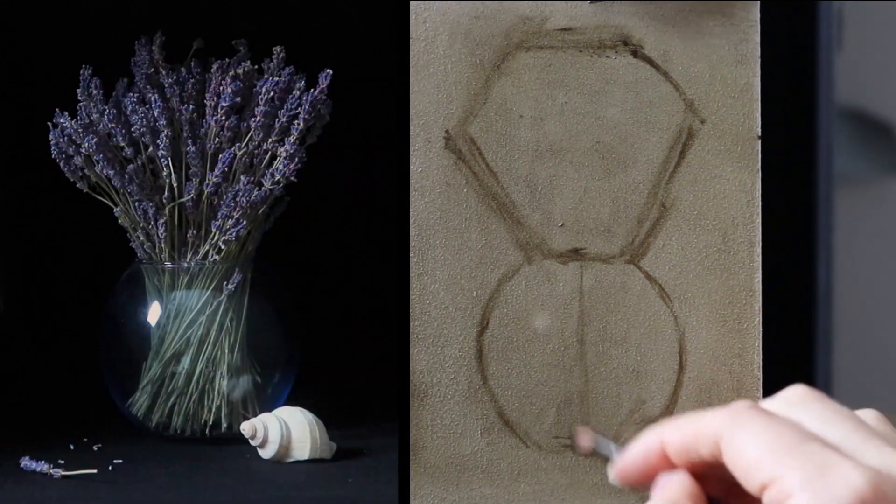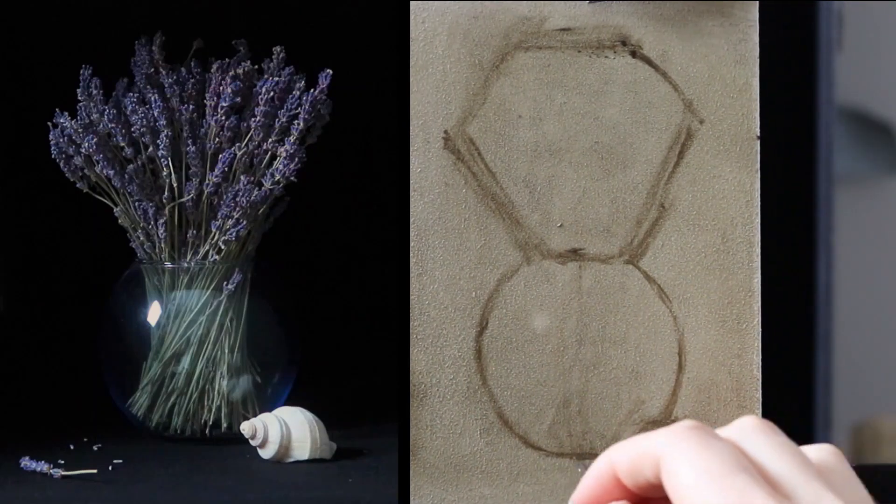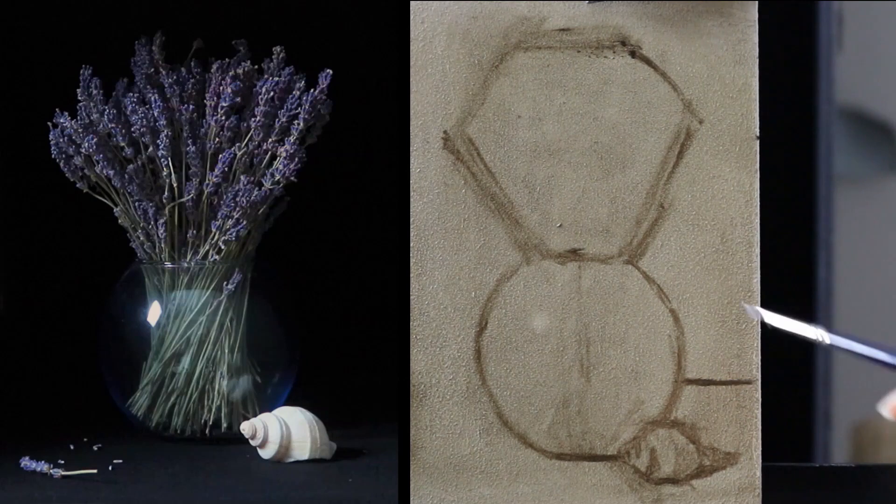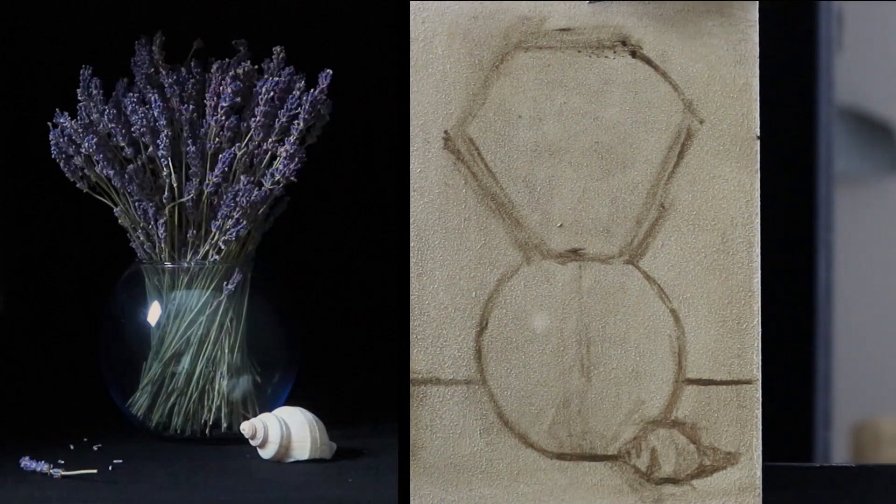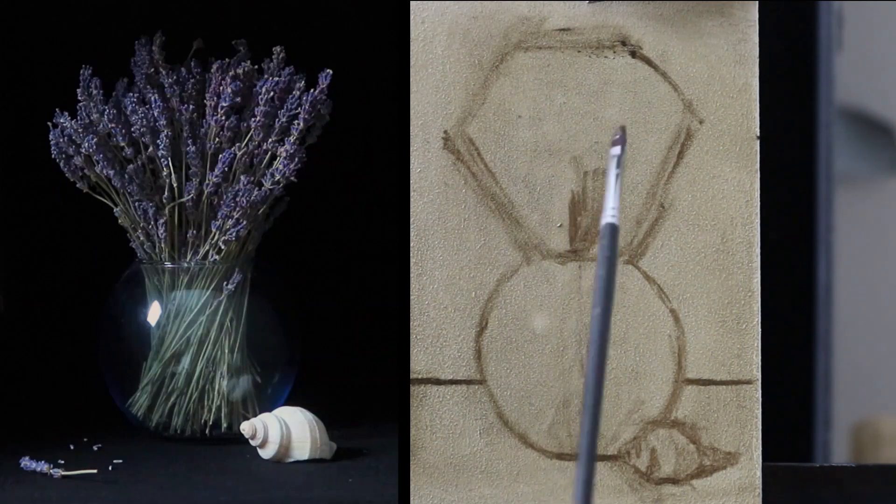These simple lines that I'm making here will be quite similar to the first marks I will make when starting the main painting. What I would do next in a larger work is to make a resolved underpainting. I will however not do this here but save that for the main painting.